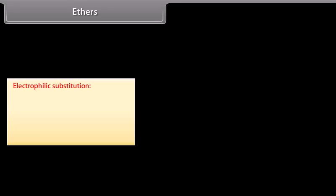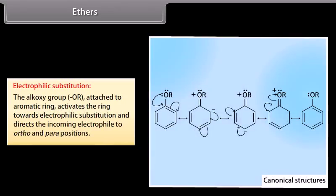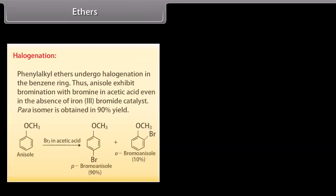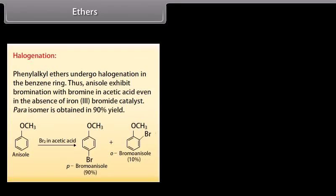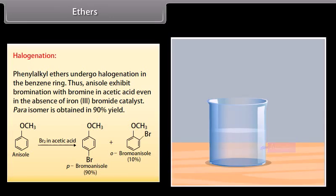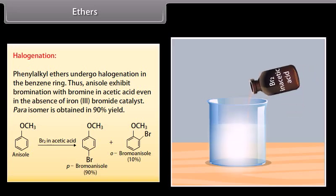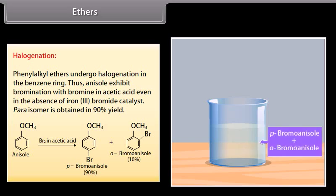Electrophilic substitution: the alkoxy group attached to the aromatic ring activates the ring towards electrophilic substitution and directs the incoming electrophile to ortho and para positions. Halogenation: phenyl alkyl ethers undergo halogenation in the benzene ring. Thus, anisole exhibits bromination with bromine in acetic acid even in the presence of iron(III) bromide catalyst, and the para-isomer is obtained in 90% yield.